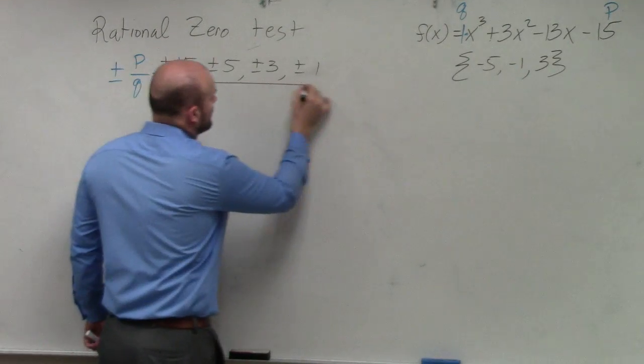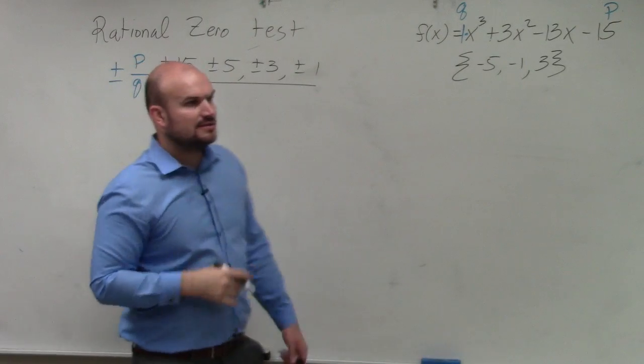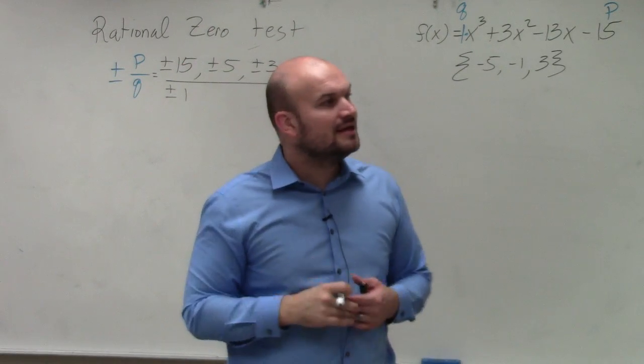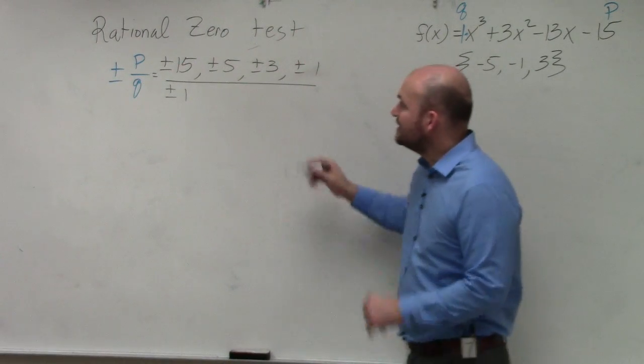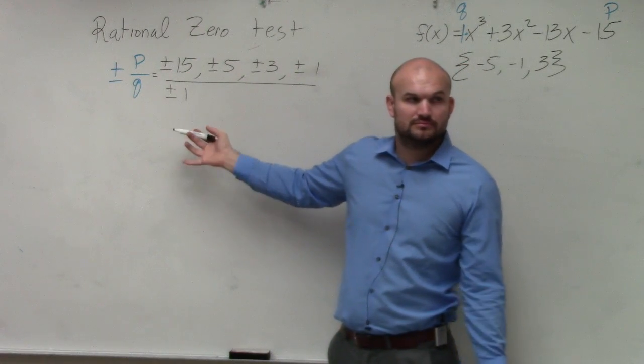All over the factors of 1. Well, that's pretty easy, right? 1 is just 1. Then all we do is list every single factor of P over every single factor of Q.